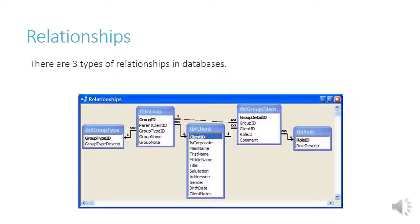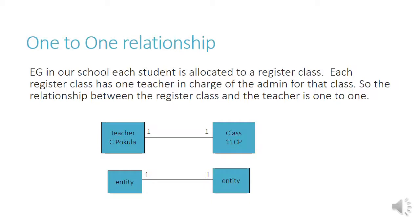Relationships. There are three types of relationships in databases. A one-to-one relationship — for example, in our school and in most schools, each student is allocated to a register class. Each register class has one teacher in charge of the admin for that class. The relationship between the register class and the teacher is one-to-one. It's one class to one teacher; one register teacher cannot handle two classes.